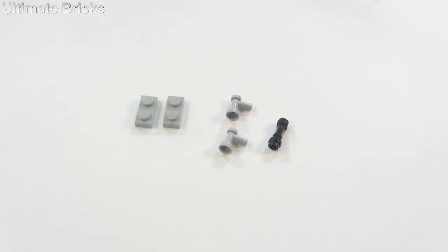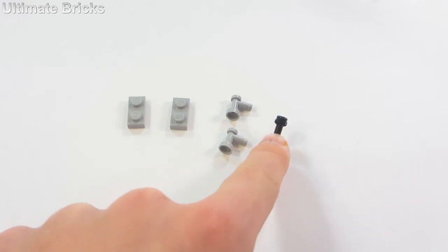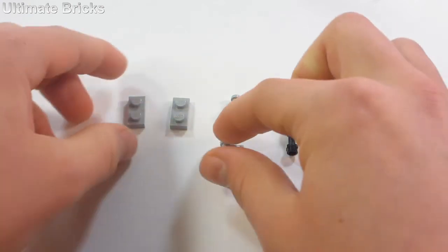If you want to build it yourself, what you'll need is two 1x2 plates, two tap pieces, and one lightsaber hilt piece, and that is per section, of course.